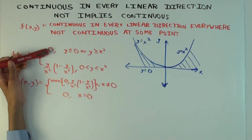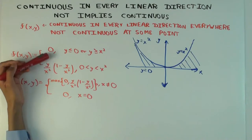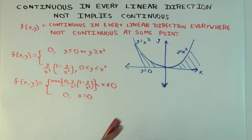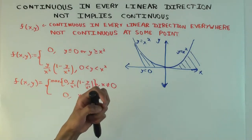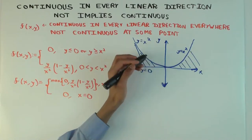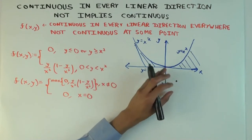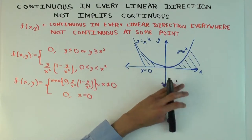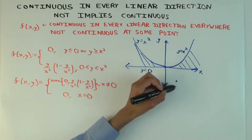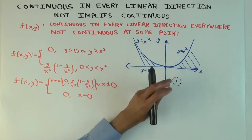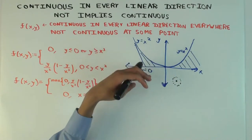First, I'm going to argue that this function is actually continuous everywhere except at the origin. At all points other than the origin, it's actually a continuous function. If my point is below the y equals zero line, the function is zero in a neighborhood of that point — you can make a small disk around it and it's zero everywhere there. So it's going to be continuous at all those points; that's not an issue. Everywhere below the y equals zero line, it's continuous.